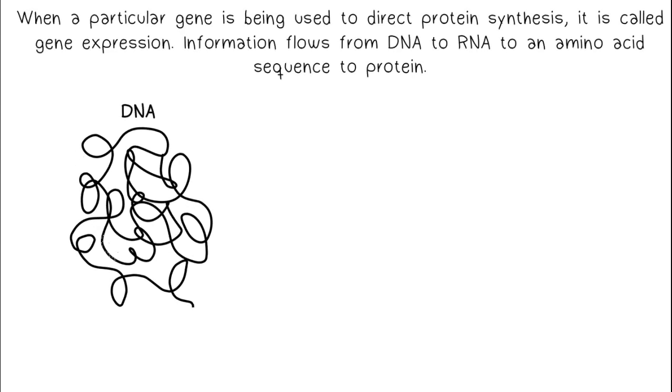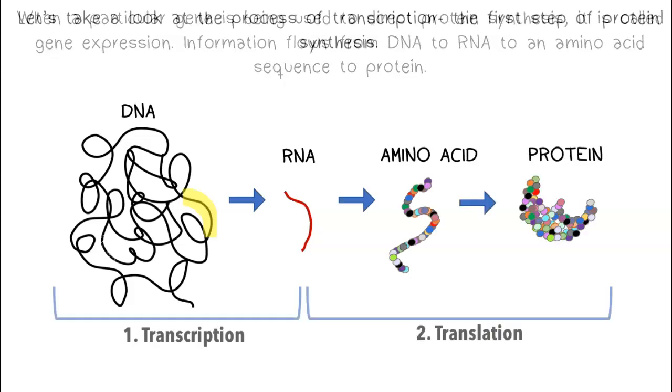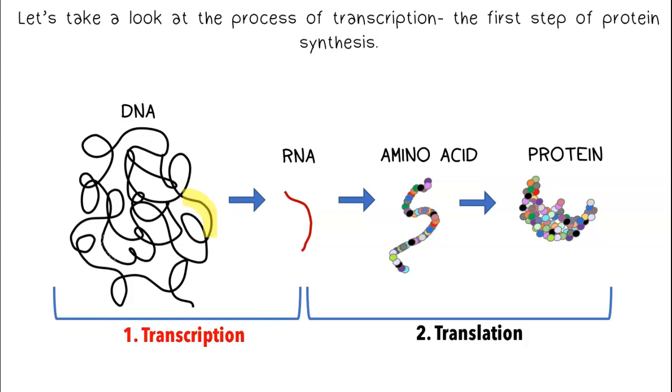When a particular gene is being used to direct protein synthesis, it is called gene expression. Information flows from DNA to RNA to an amino acid sequence to protein. Let's take a look at the process of transcription, the first step of protein synthesis.